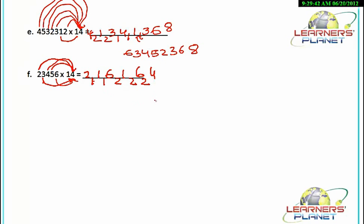Now in the next step, 4, 2 plus 6, 8. Then 2 plus 1, 3, 2 and 6, 8, 1 and 1, 2, 1 and 2, 3. So we are getting the answer is 328,384. The method is very simple.